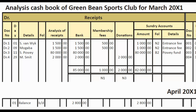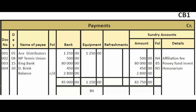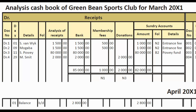Before posting to the general ledger, we close off the cash book. The cash book is a combination of cash receipts journal, cash payments journal, and the bank account, so we balance it the same way we balance a bank account. We draw the lines, add up both sides. The totals on the bank column come to $85,000. Deducting the smaller side from the larger gives a difference of $2,800, which is the balance carried down on the credit side, and balance brought down on the debit side.